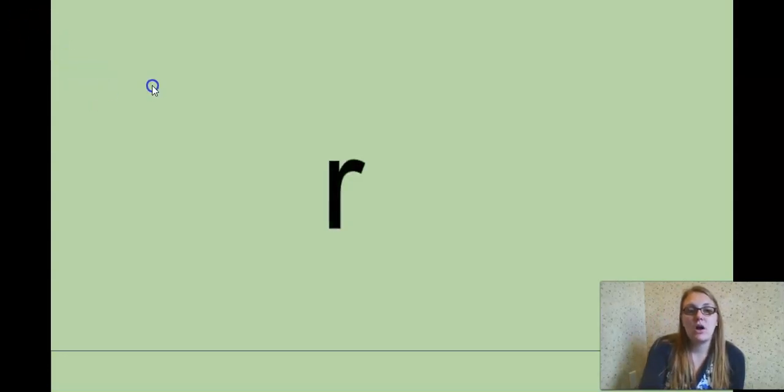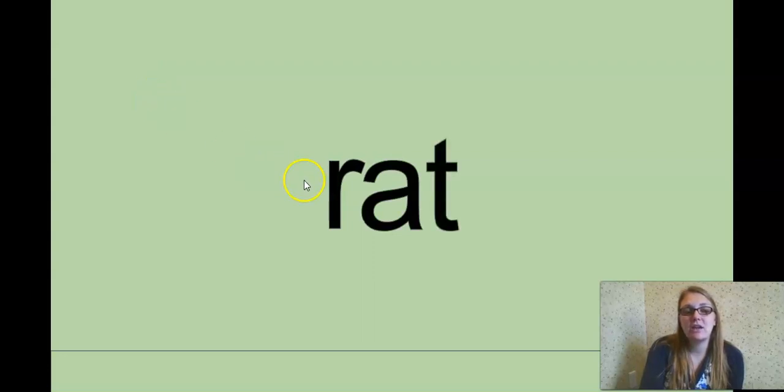Okay, our next part. We are going to spell out and chain some words. So the word to get us started is rat. Let's sound it out. R A T, rat. Good. So to spell it, R, A, T. Rat. Good job.